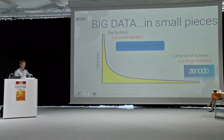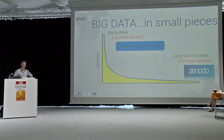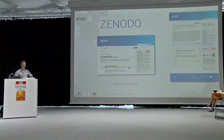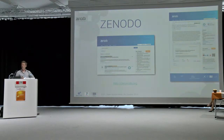At CERN, we have something like 100 petabytes archive and around 90,000 computing cores in Geneva, and another five petabytes in Hungary. Computing and data management is at the heart of what we're doing. What we're trying to do with Zenodo is leverage all the experience we have in research data management to the long tail of science — to you — so that you can deposit your research data in a place that is safe, where it's going to be stored for the future, and we'll do our best to make it readable in 20 years' time.